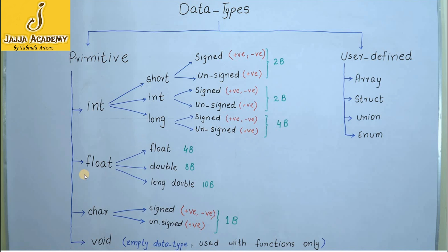Now let us move to the second primitive data type, which is float. As discussed, the integer data type can store only whole numbers. If we want to store fractional values or values with decimal numbers, we will opt for float data type. A float data type is used to store floating point numbers — numbers with fractional values such as 10.5 or 2.5 — which are not supported by integer variables.